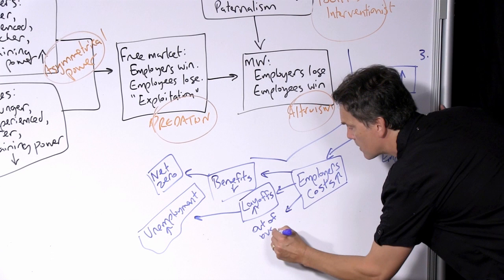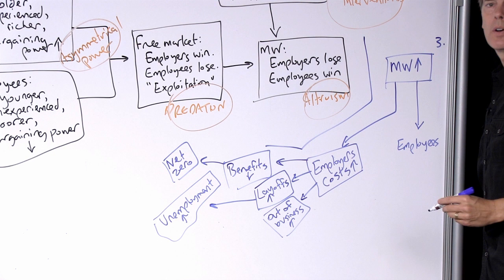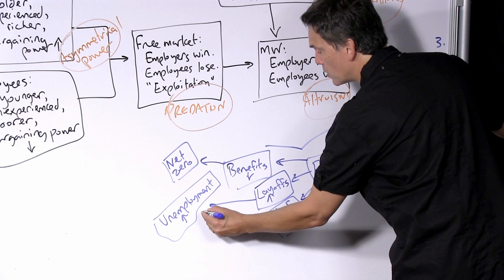What will happen to some employers is they will simply go out of business. They won't wait for actual bankruptcy and debt to occur. Instead, they'll just close their doors and go out of business. The clear implication here is those ones that do go out of business will lay off their workers. And so there's unemployment.